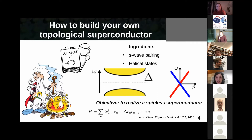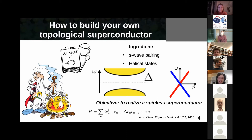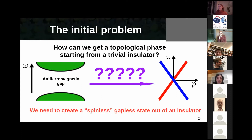To understand how we can use antiferromagnetic insulators for building a topological superconductor, let us recall the basic ingredients needed. There are basically two main ingredients: one is conventional S-wave superconductivity, and the other is helical states. We can get helical states naturally from a topological insulator, by combining Rashba spin-orbit coupling and exchange fields in semiconductors, or by creating effective helical states from non-collinear magnetism in a system on top of a superconductor. That is what we need to get in an antiferromagnetic insulator to achieve topological superconductivity.